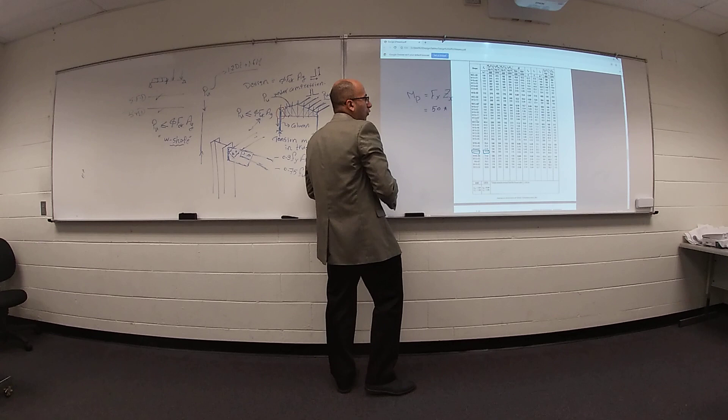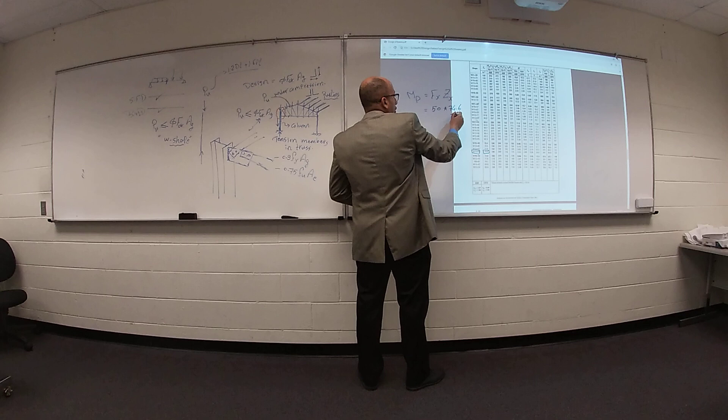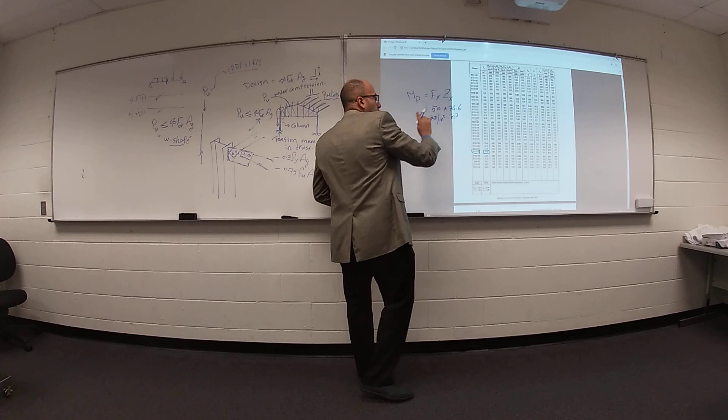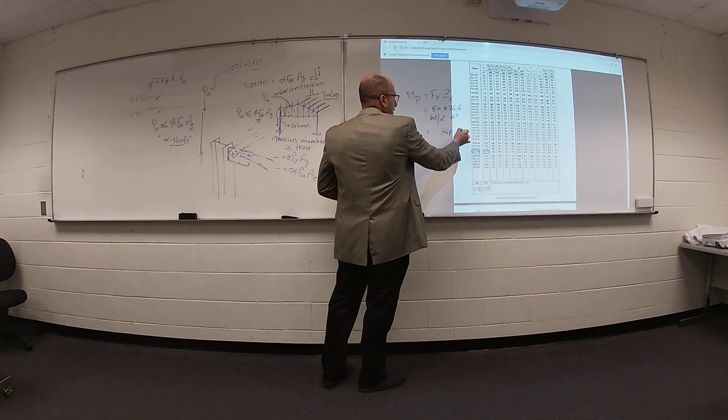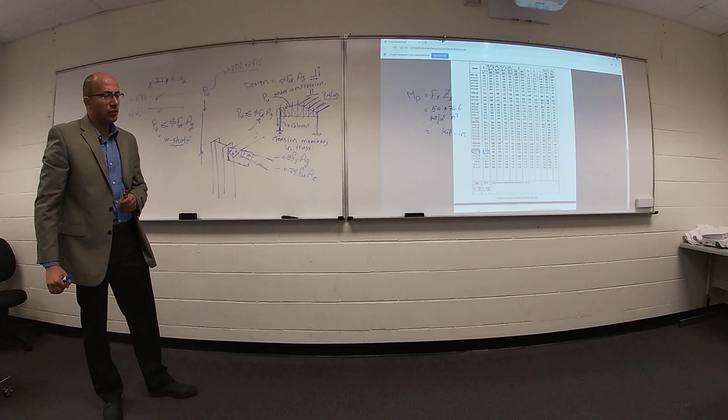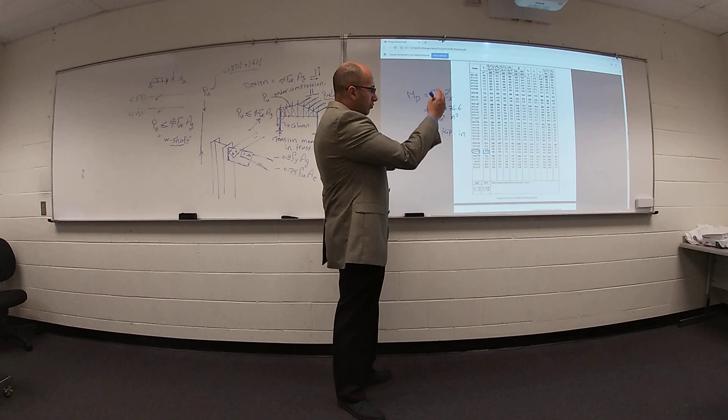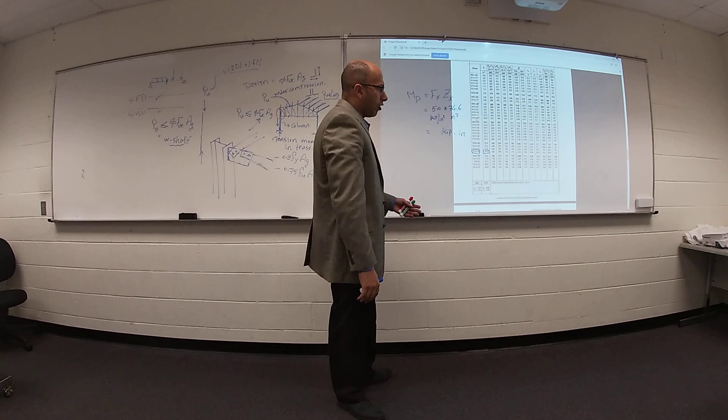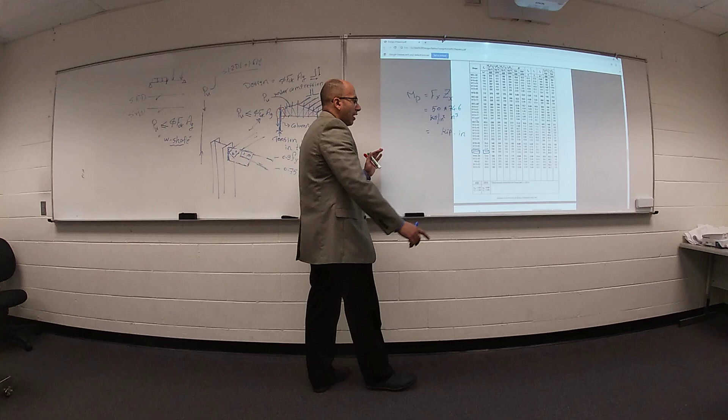The units are inches cubed, and this divided by inches squared. Your final answer will be: 10 times 50 times 74.6 — very simple, not like concrete design where we need to do many calculations. For steel, if you would like to get your plastic moment, your nominal moment, just F-yield times Zx. Z comes from your table times F-yield.